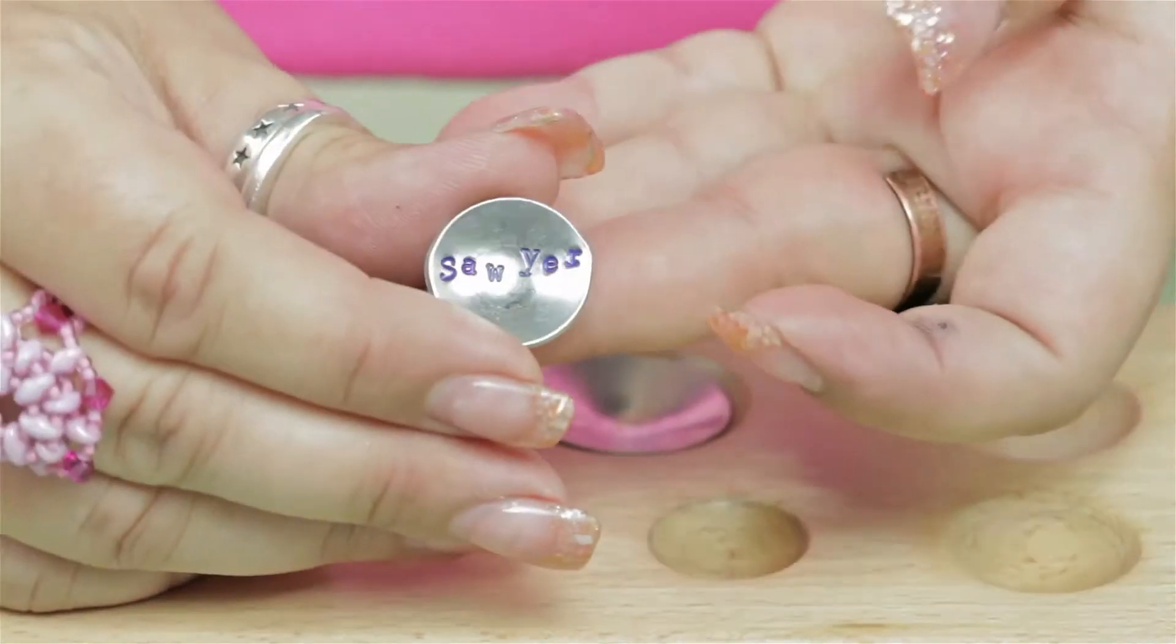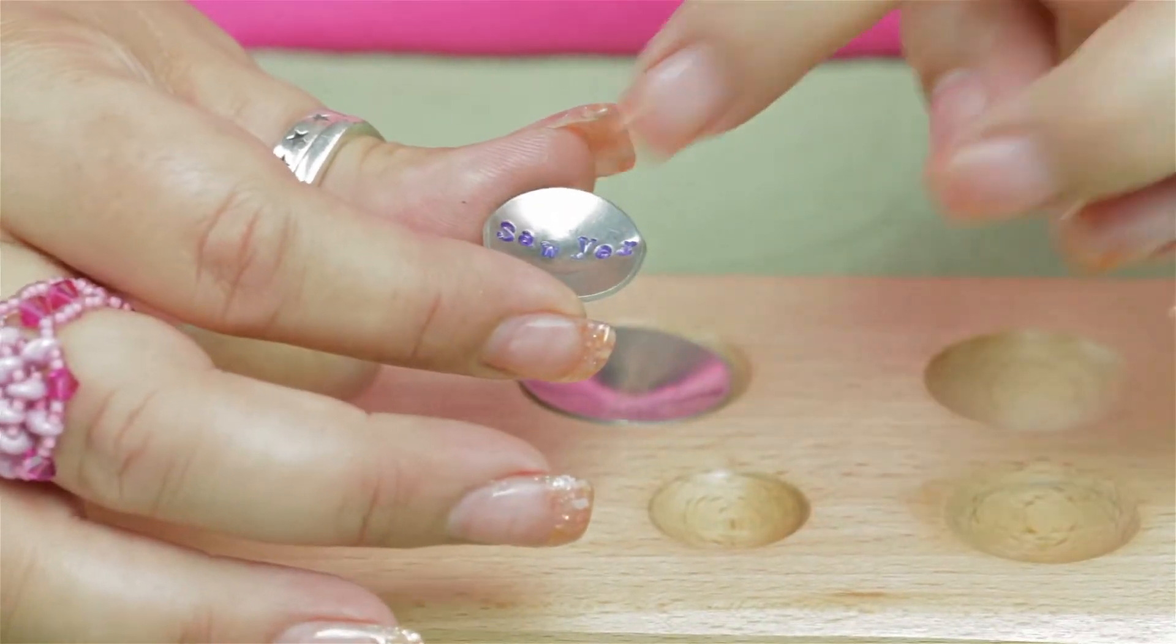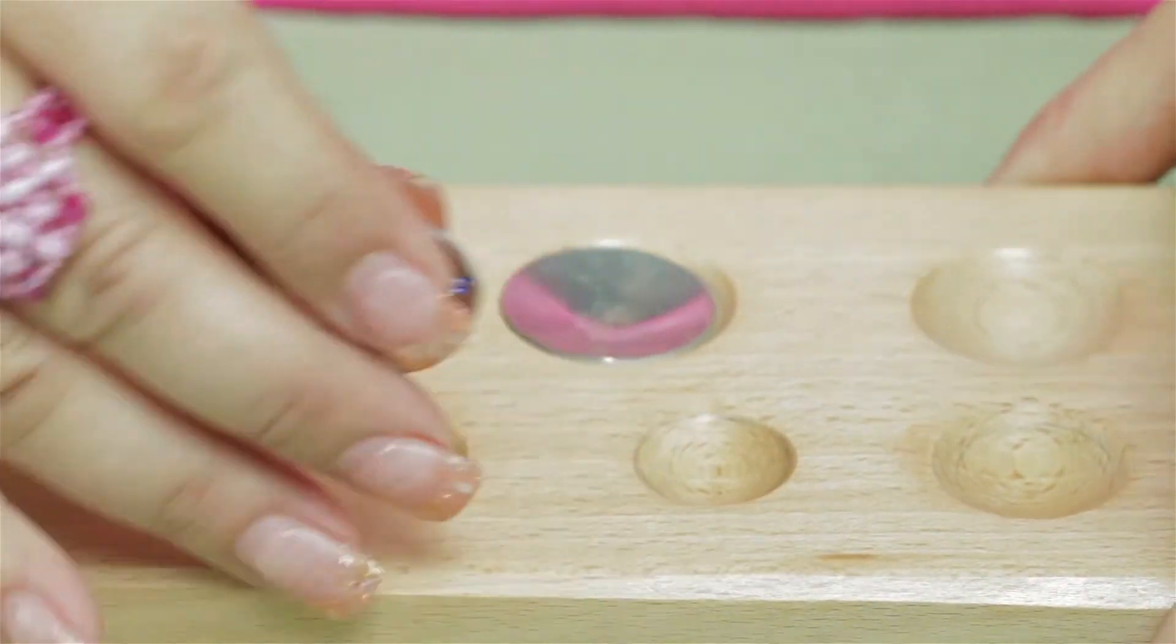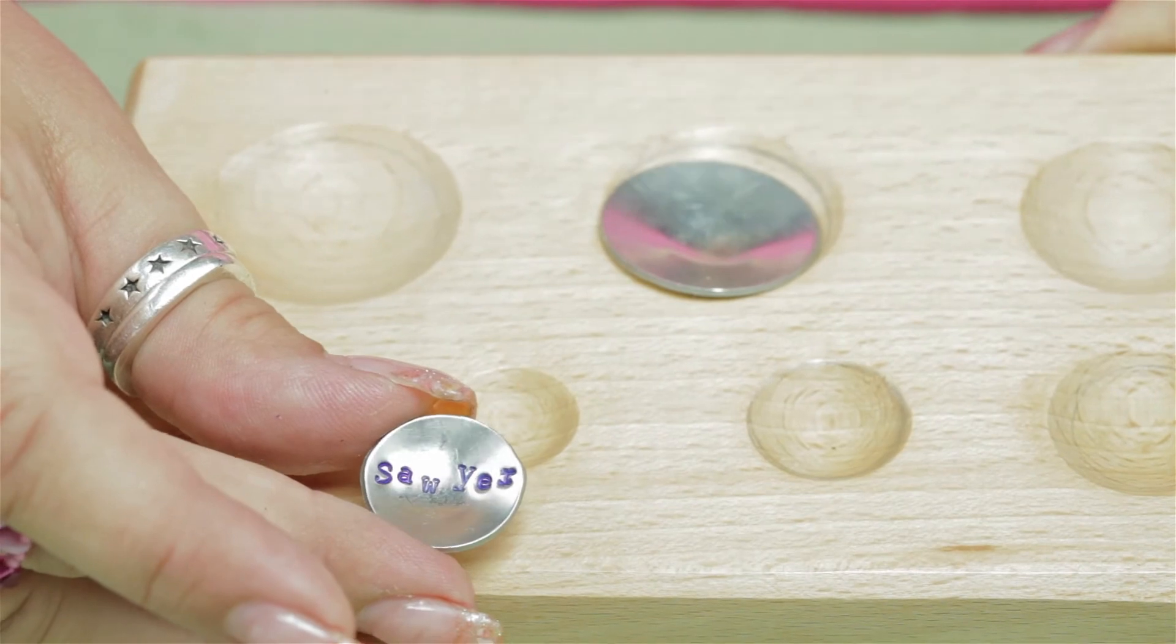In this case, I've stamped the name first and then stamped it into a concave. I can punch a hole in here and use this as a charm. So you can find this wood dapping block and other items at Antispeeds.com.